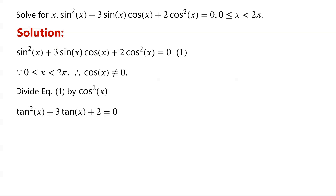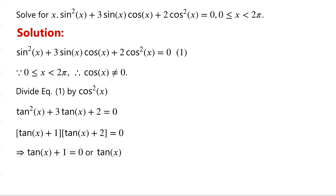The left-hand side of the equation can be factored as tan of x plus 1, times tan of x plus 2. So we have either tan of x plus 1 equals 0, or tan of x plus 2 equals 0.